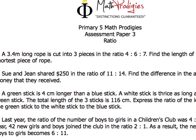Okay, so a 3.4 meter long rope is cut into 4 to 6 to 7. So, let's imagine that it's a 3.4 meter long rope over here. Okay, so this is a rope, and it's cut into 3 pieces.